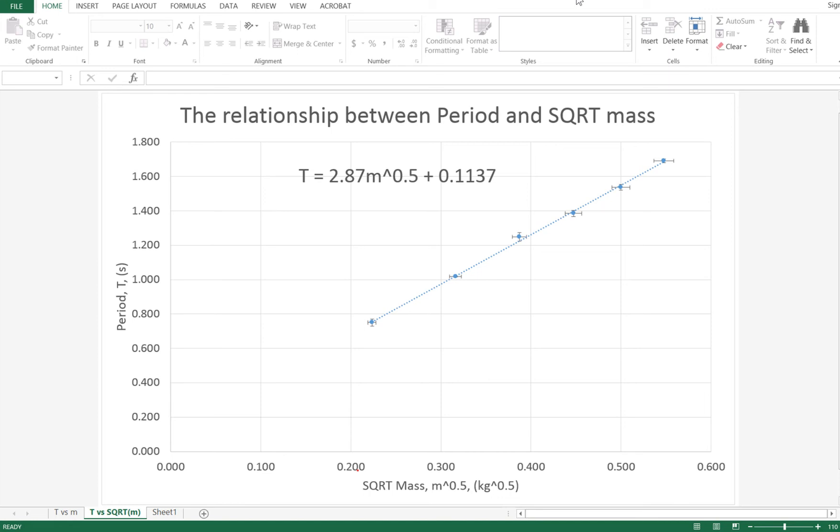Now unfortunately Excel doesn't have any way that I know of where you can automatically add a line of worst fit like we did with our line of best fit. So we're going to have to do this the hard way. We're going to actually have to manually add a line of worst fit.